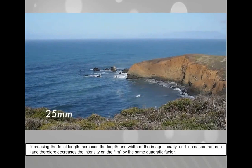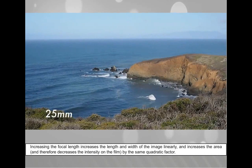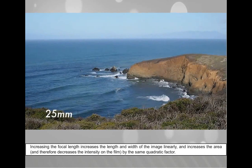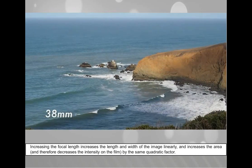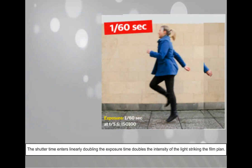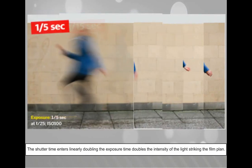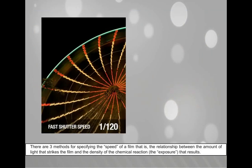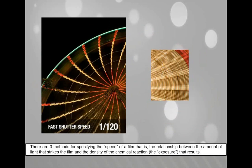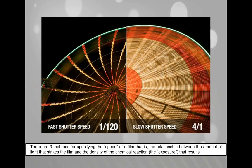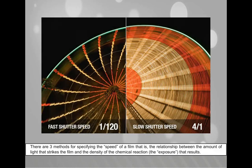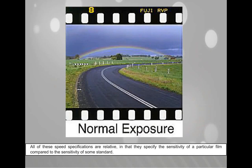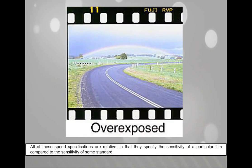Increasing the focal length increases the length and width of the image linearly and increases the area, therefore decreasing the intensity on the film by the same quadratic factor. The shutter time enters linearly — doubling the exposure time doubles the intensity of the light striking the film plane. There are three methods for specifying the speed of the film: the relationship between the amount of light that strikes the film and the density of the chemical reaction (the exposure) that results. All of these speed specifications are relative, specifying the sensitivity of a particular film compared to the sensitivity of some standard.